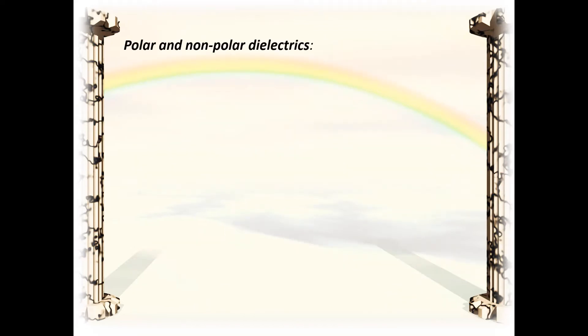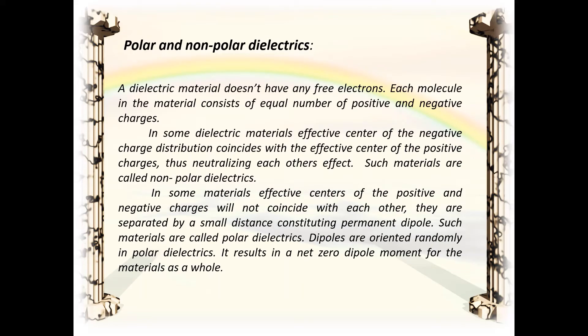A dielectric material does not have any free electrons. Each molecule consists of equal numbers of positive and negative charges. In some dielectric materials, the effective center of the negative charge distribution coincides with the effective center of the positive charges, neutralizing each other's effect — such materials are called non-polar dielectrics. In other materials, the effective centers do not coincide and are separated by a small distance, constituting a permanent dipole; these are called polar dielectrics. Dipoles are oriented randomly in polar dielectrics, resulting in a net zero dipole moment for the material as a whole.